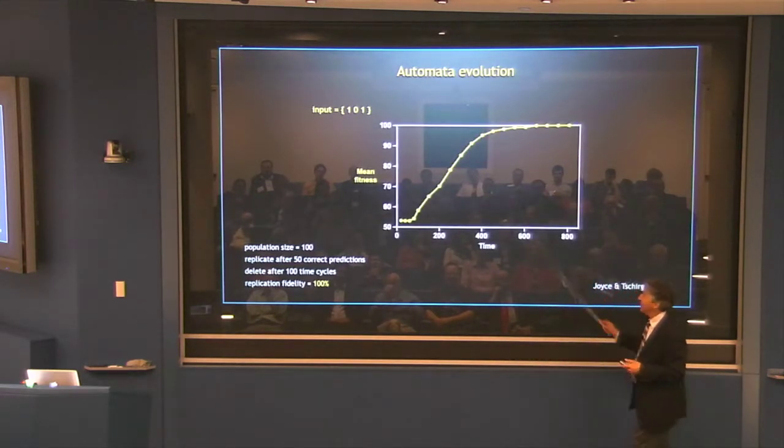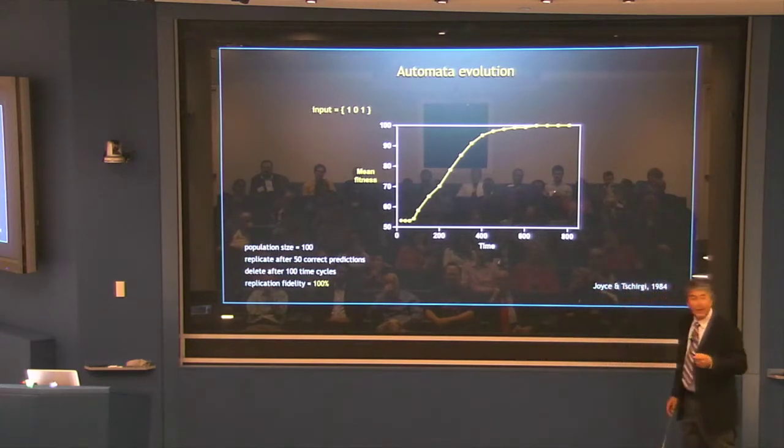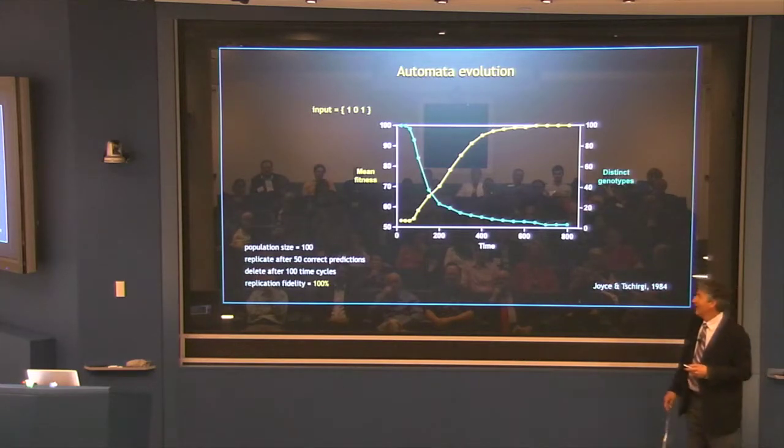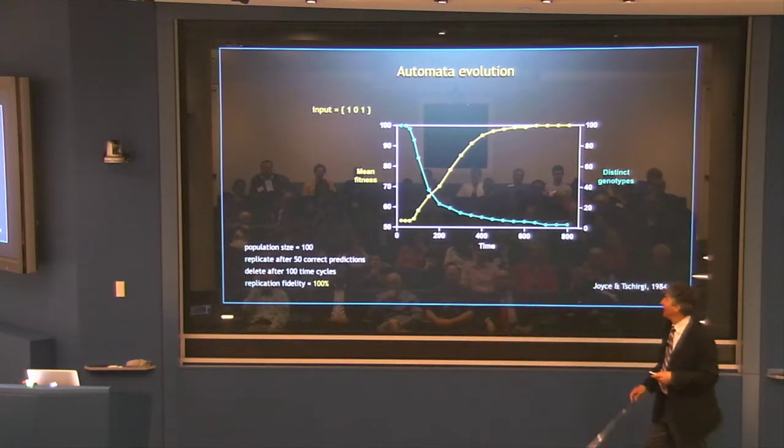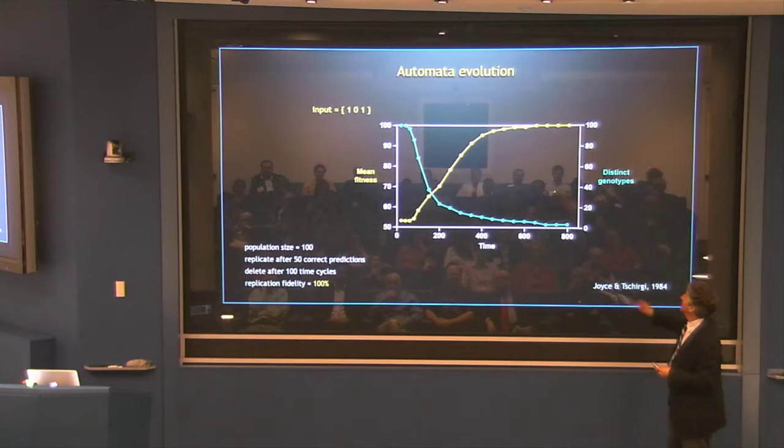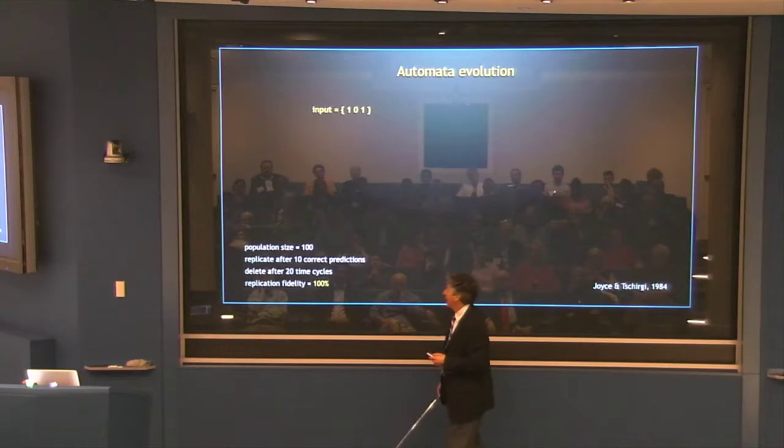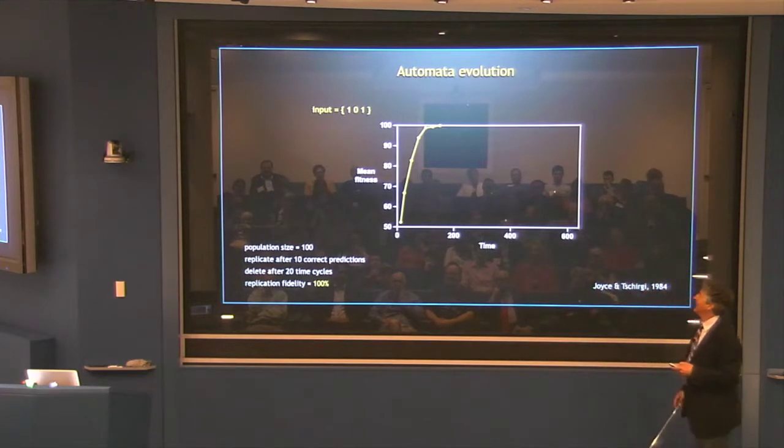We ask them to predict what the next input would be based on their current output. Every time the prediction is correct, they get a brownie point. After 50 brownie points, they get to reproduce. The string is copied, subject to mutational error to produce a progeny string. If they're doing no better than random chance, after 100 cycles, they're deleted. Let's start it out with perfect replication fidelity. Every copying will faithfully reproduce the parental string to a progeny string. Here's the environment, a simple environment. It's the repeating sequence 1-0-1, 1-0-1. Any replicating automata that can sync to that wins. Here we go. This is time in computer cycle time. It rounds through the prediction for the 100 individuals in the population. After a certain amount of time, everybody's getting it right. Only 2 of the 100 starting individuals in the population are synced to 1-0-1. So they're what's left in the population.